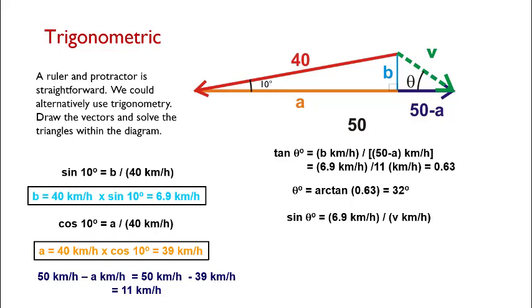Next up, we'll find the sine of that angle in order to determine the line length of V. The sine of that angle will be our line length of B over V, so that's 6.9 kilometers per hour, and our V is unknown. So we'll need to rearrange to solve for V. When we do so, we're going to find that our V is actually equal to 13 kilometers per hour.